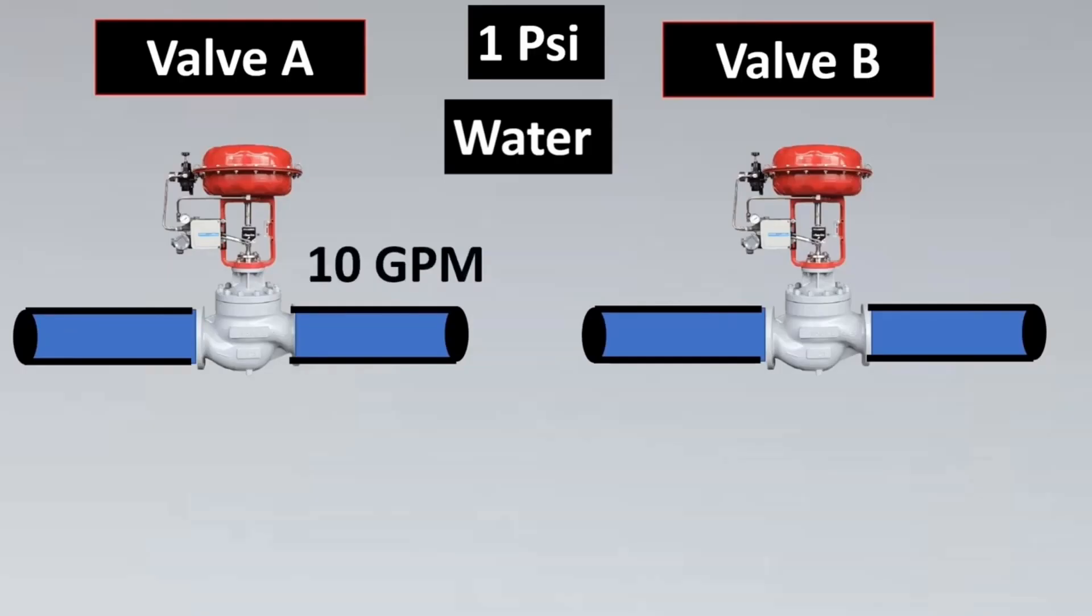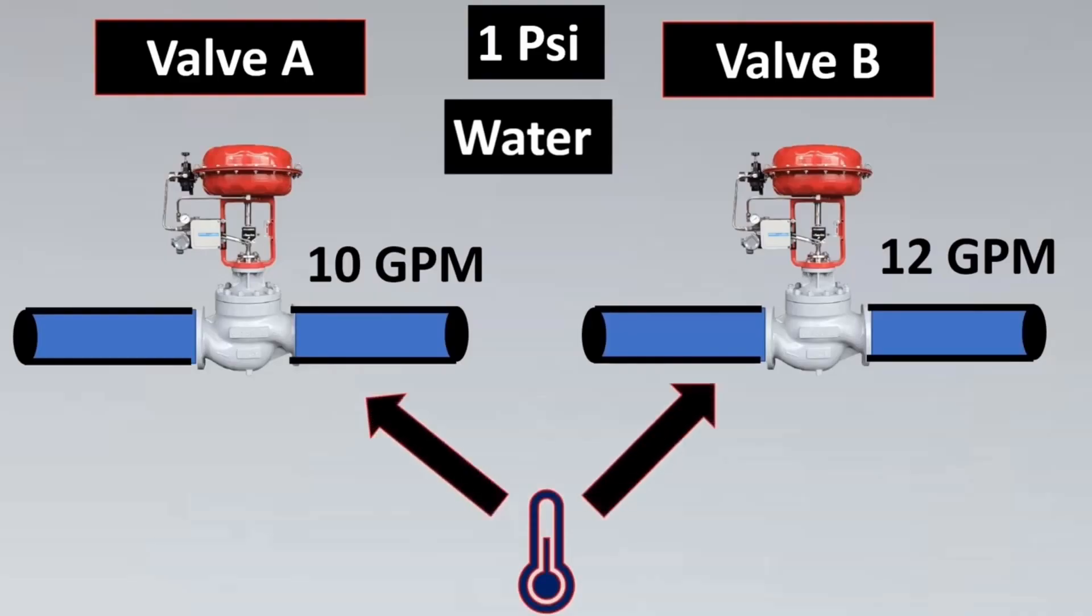I get 10 GPM as the flow rate for this valve, and for valve B I'm getting 12 GPM. What is the issue here? Another parameter comes into play, which is the temperature.